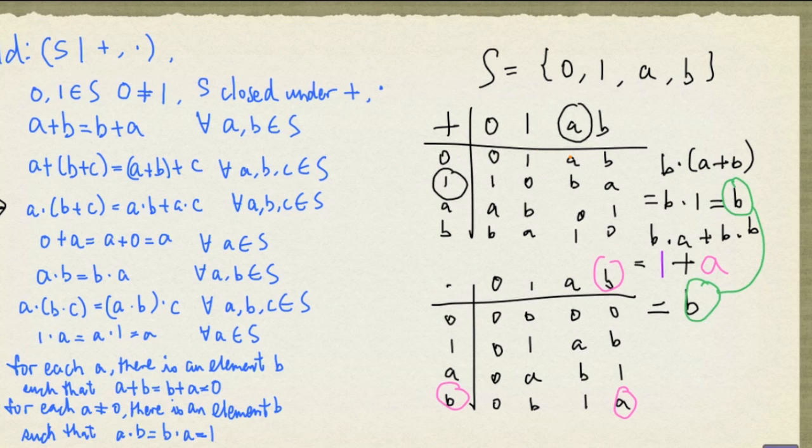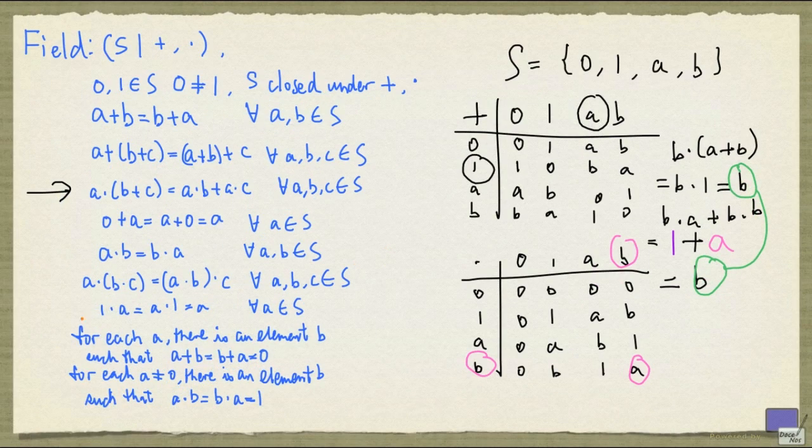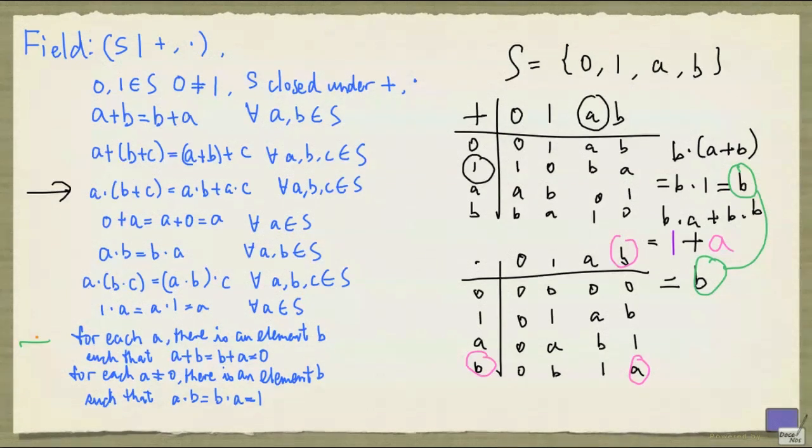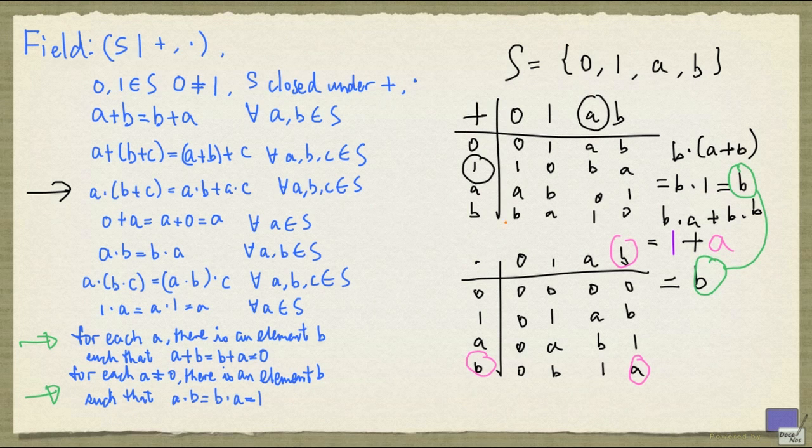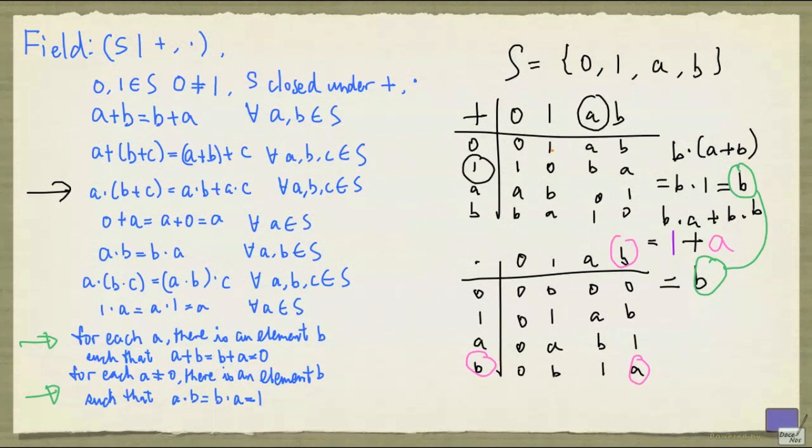So as far as this particular choice of elements is concerned, the rule is satisfied. But of course, we have to check all possible combinations. And now, what about these two rules down here? These are easy to check, because if you just look at the table, for each element, when you add it to itself, it gets 0.